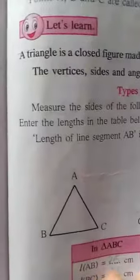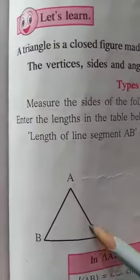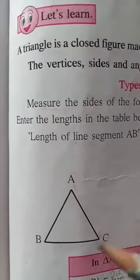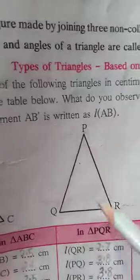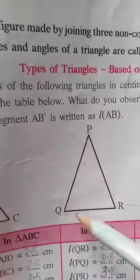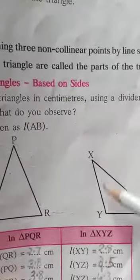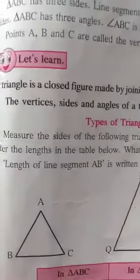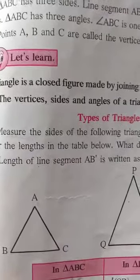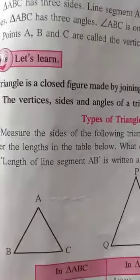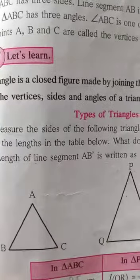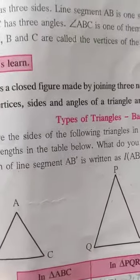So what did you find here? What did you observe? In triangle ABC all the three sides are equal. In triangle PQR, two sides are equal and the third one is different. And in triangle XYZ, all the three sides are different. So these are based on the sides, and these different types of triangles have different names.